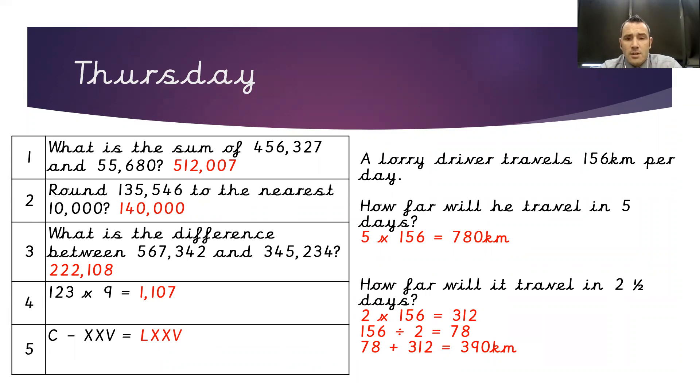The way I've done it, I've done 2 times 156, which will give me my two full days, which is 312 kilometres. I've then divided 156 by 2 to give me the half a day, which was 78 kilometres. I've then added those two numbers together. So 78 plus 312, which has given me a total of 390 kilometres.